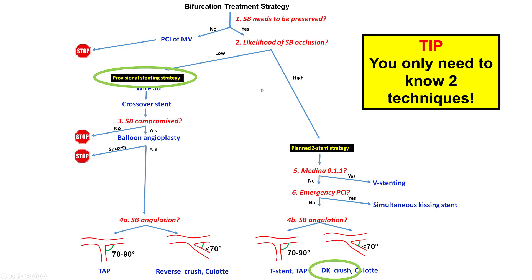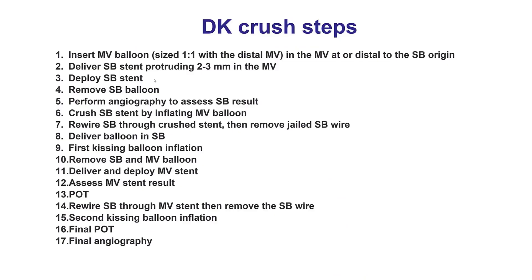Moving on to the left main, this was a bifurcation with involvement of the distal left main. The two key techniques for these bifurcations are the DK crush if two stents are needed, or the provisional strategy. In our case, we were concerned about potentially losing the side branch given the location of the lesion, so we decided to proceed with the double kissing crush technique, which was accomplished using a minimal amount of contrast.